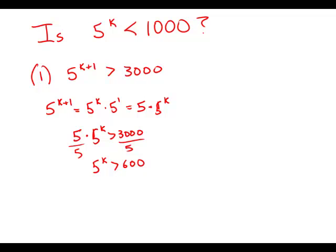Well, knowing that 5 to the k is greater than 600 doesn't answer the question, is it less than 1,000? It could be slightly bigger than 600 or it could be extravagantly bigger than 600. When it comes right down to it, there's a whole infinity of the number line that is larger than 600, and we don't know where on that infinity 5 to the x falls. So this statement by itself is simply not sufficient.